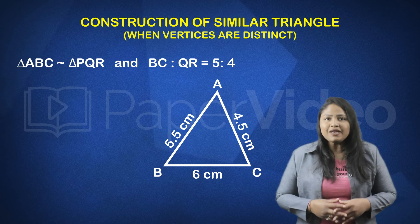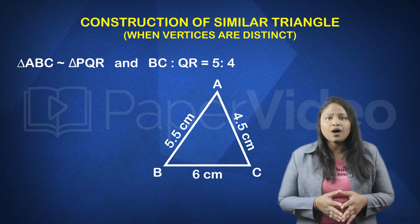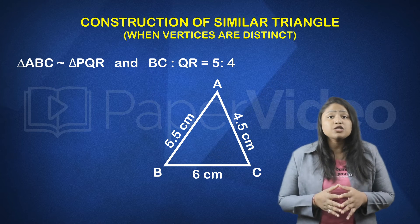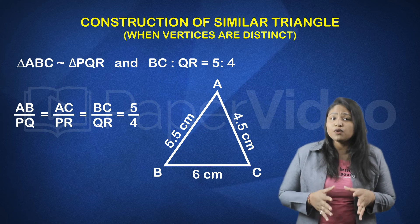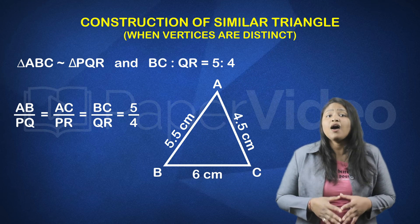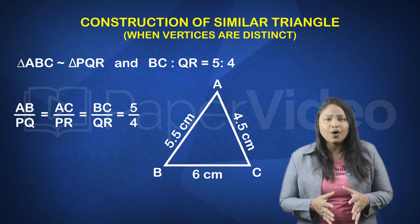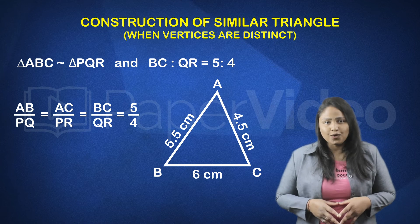As we know triangle ABC is similar to triangle PQR so their sides must be proportional. Therefore AB upon PQ equals to AC upon PR equals to BC upon QR equals to 5 upon 4.